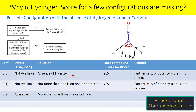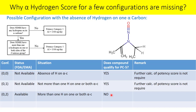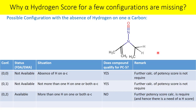Now let's talk about the 0,2 configuration, which is available in the FDA and EMA guidance document. Does this compound qualify for potency category 5? First question: does the NDSRI have any hydrogen on its alpha carbon? Yes — there are two hydrogens. Then, does the NDSRI have more than one alpha hydrogen on one or both sides of the N-nitroso group? Yes. So this compound does not qualify for potency category 5, further potency score calculation is required, and hence the alpha hydrogen score is provided.